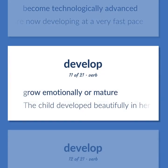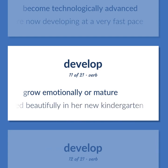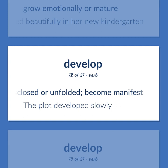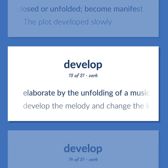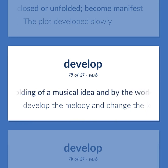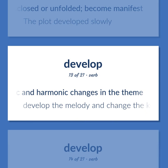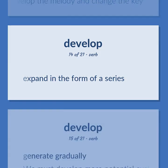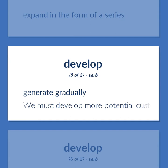Develop: Become technologically advanced — many countries in Asia are now developing at a very fast pace. Grow emotionally or mature — the child developed beautifully in her new kindergarten. Be gradually disclosed or unfolded, become manifest — the plot developed slowly. Elaborate by the unfolding of a musical idea and by the working out of rhythmic and harmonic changes in the theme — develop the melody and change the key. Expand in the form of a series. Generate gradually — we must develop more potential customers.